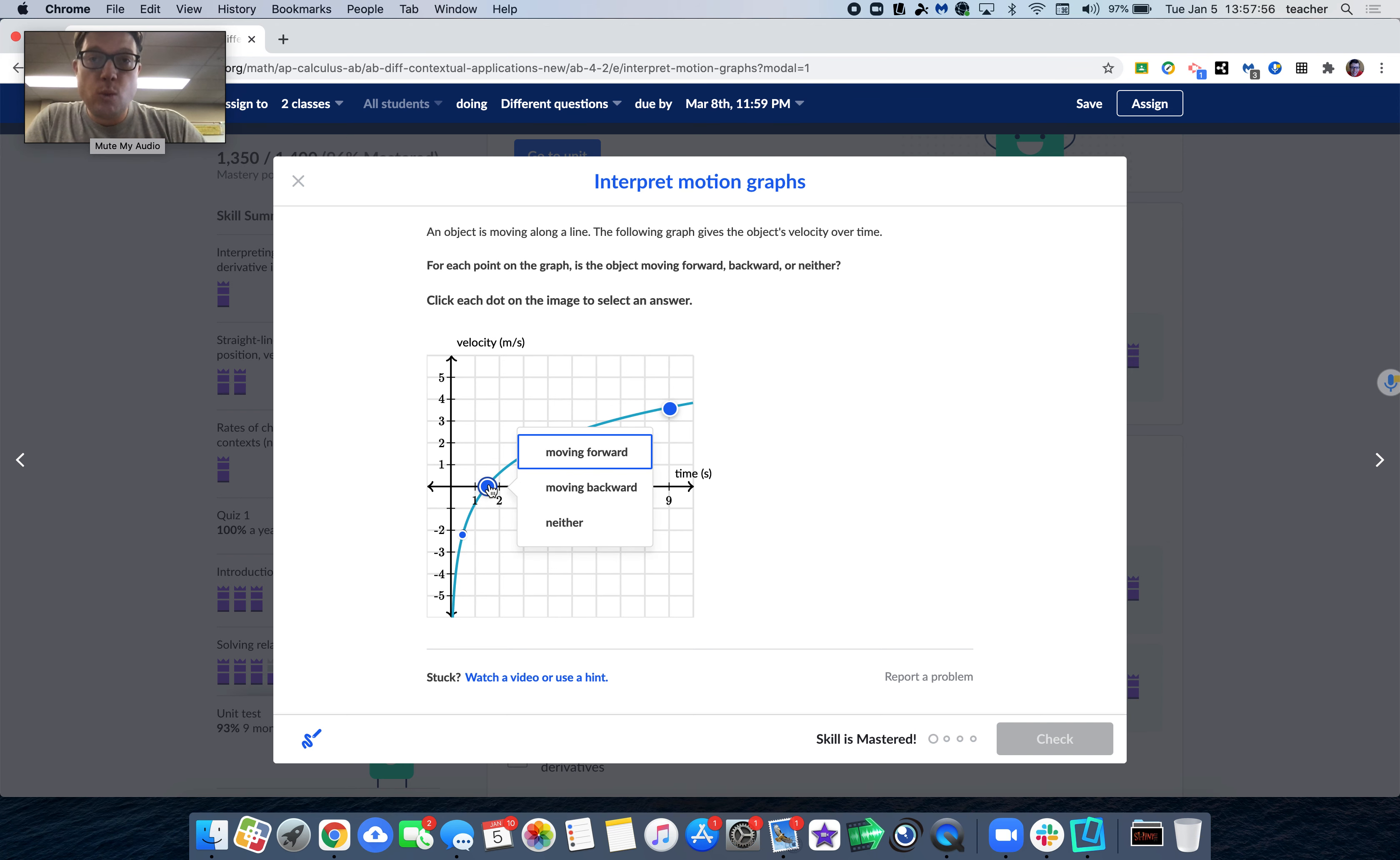If we're exactly at the y-axis, we have a velocity of zero, we're not moving at all. And the further that the velocity function moves away from the x-axis, the faster the actual object is traveling.